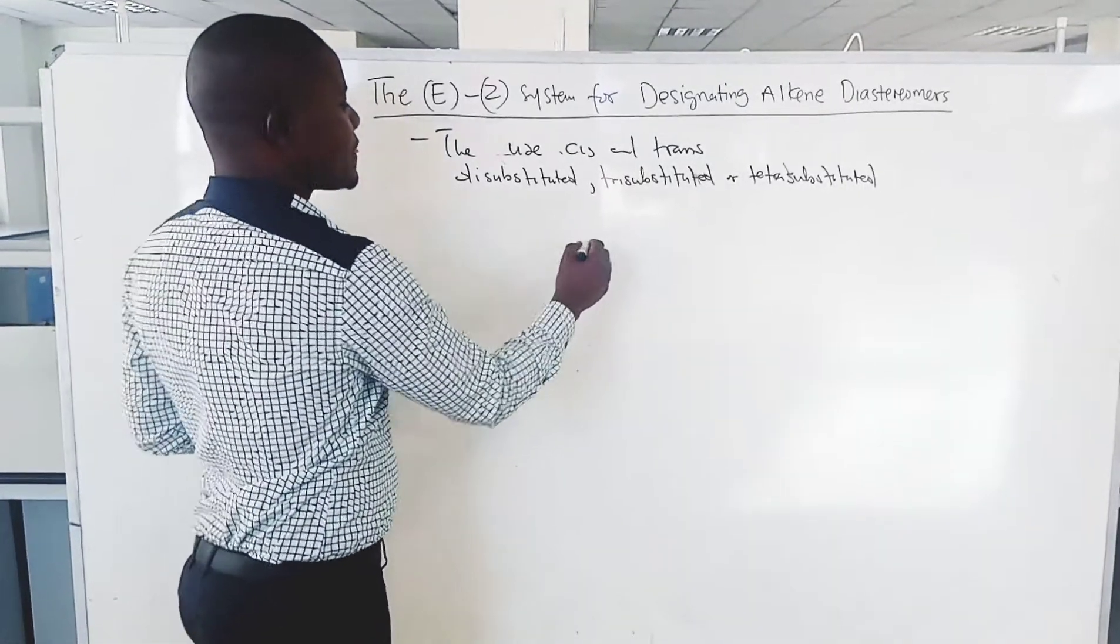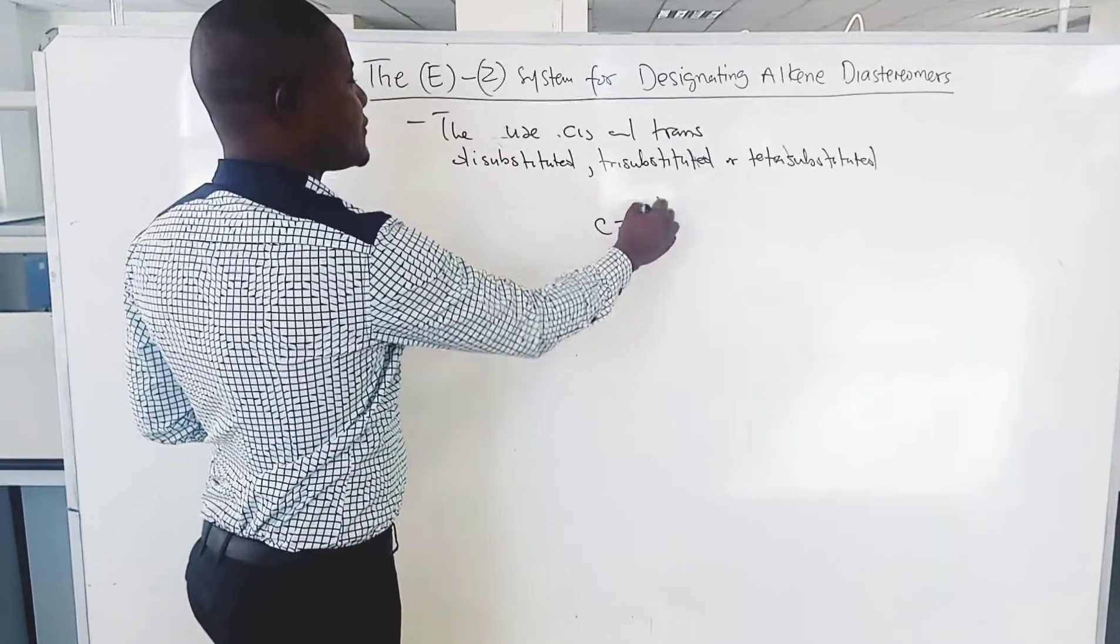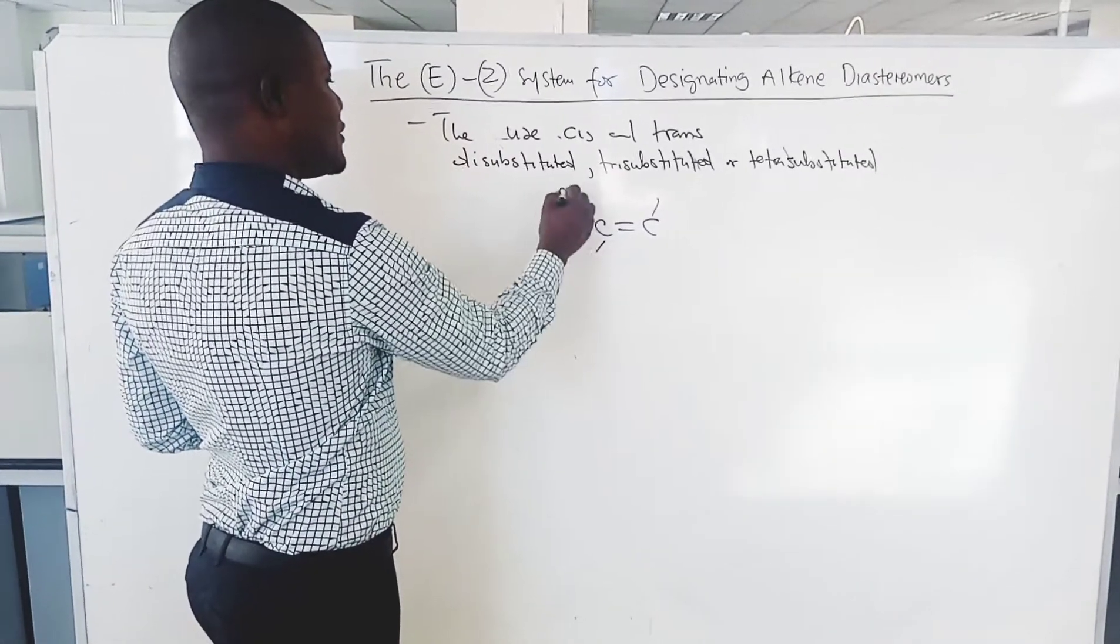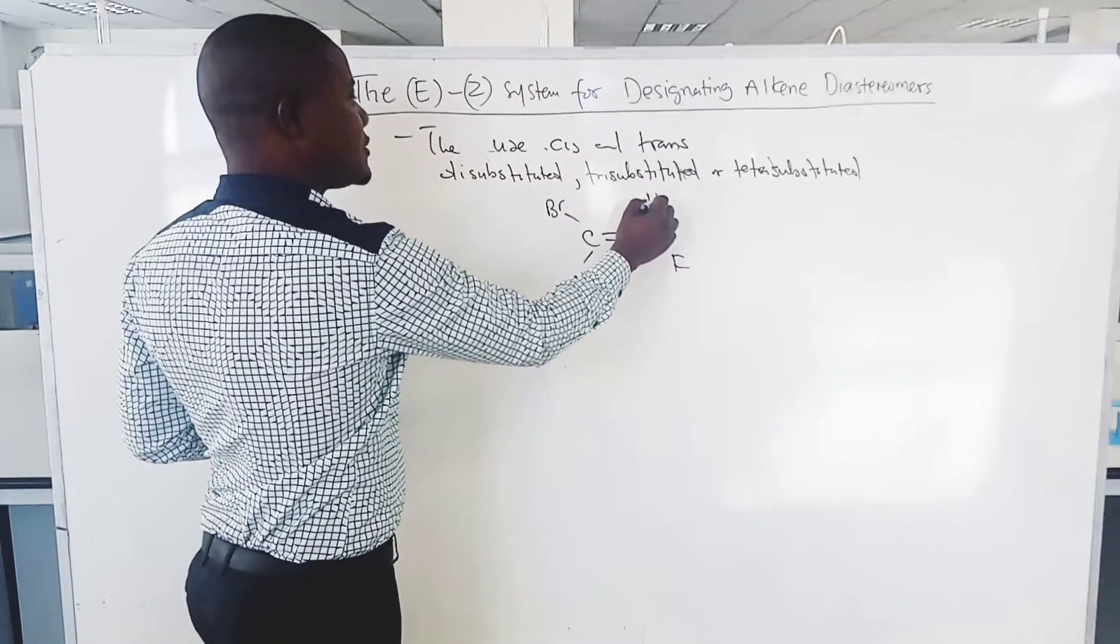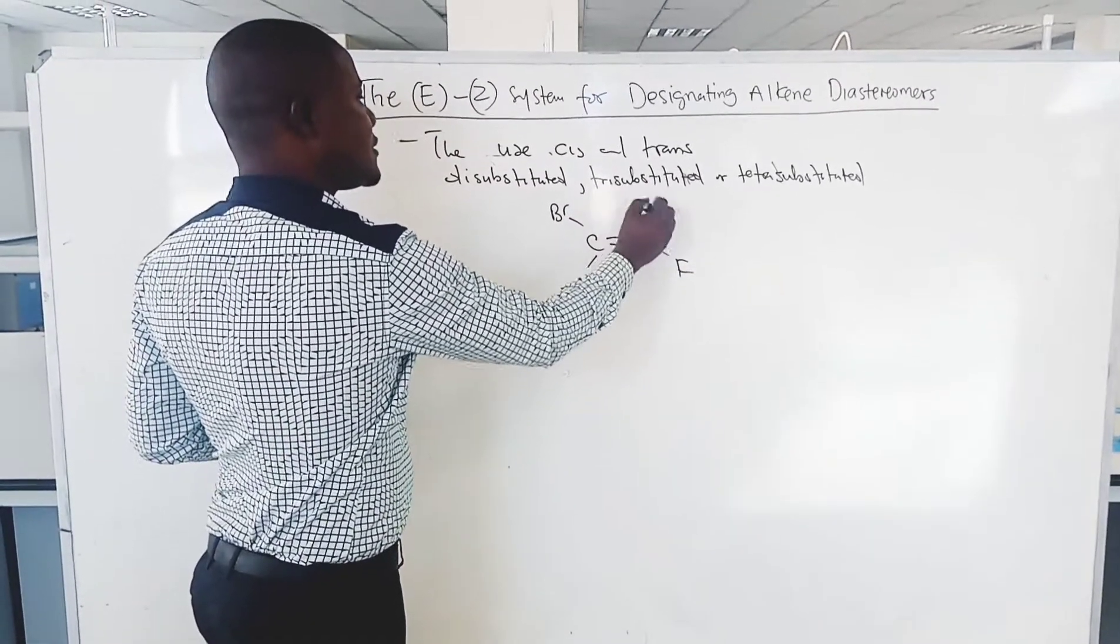So, for example, this alkene, we have bromine, fluorine, fluorine there, hydrogen, let's say chlorine, then hydrogen.